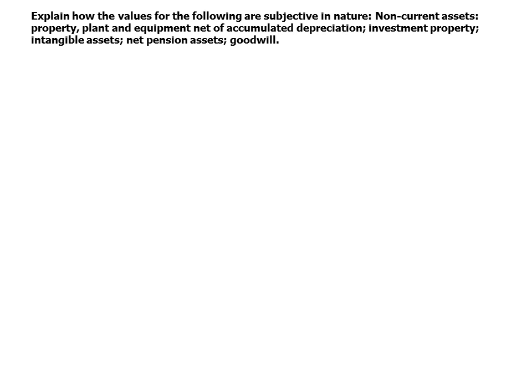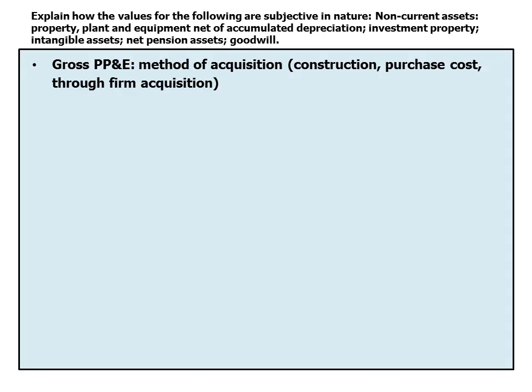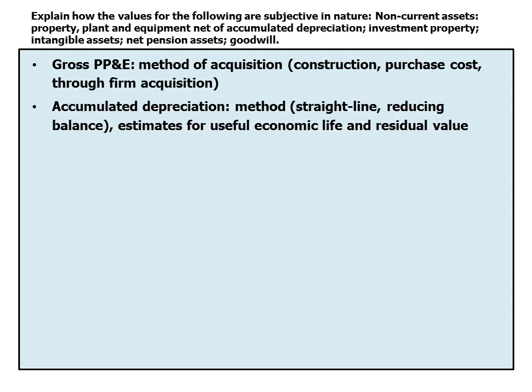Moving on to non-current assets: subjectivity in property, plant and equipment, accumulated depreciation, investment property, intangible assets, net pension assets, and goodwill. The gross figure for property, plant and equipment is affected by the method of acquisition — whether the company constructed it itself (capitalizing or expensing interest), bought it outright from a third party, or acquired it through a firm acquisition, in which case it's valued at appraised value at the time of acquisition.